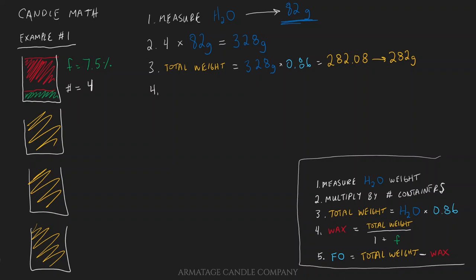So how much wax do we need to melt down for these four containers in this batch? And that's going to be our equation: wax equals our total weight, which was 282 grams. It's okay to round at that point. We're going to divide that by one plus seven point five percent, which is 7.5 divided by 100. So this is the same as writing 282 grams divided by one plus 0.075. And when we run that through the calculator we end up with 262.3 grams, which I would round to 262 grams.